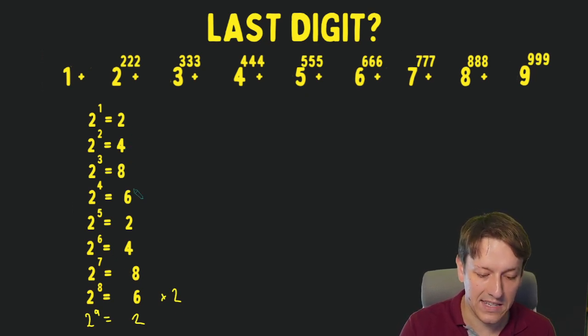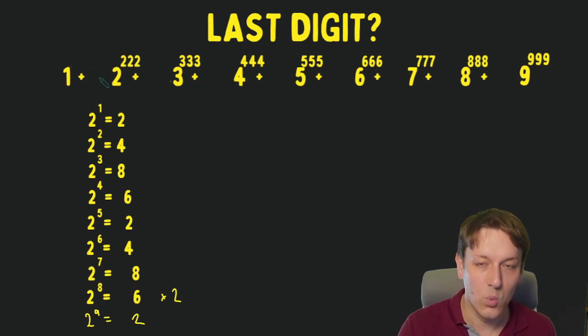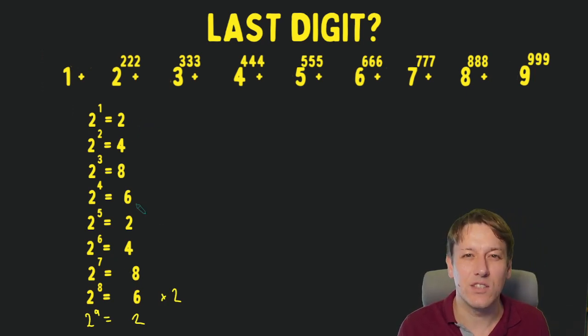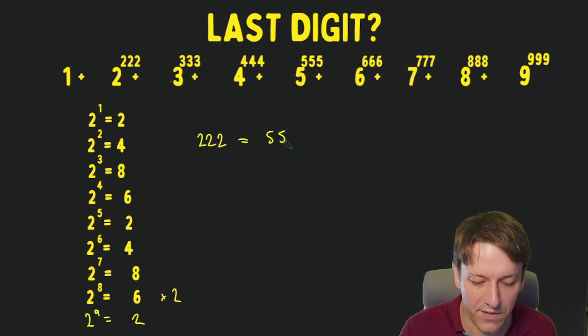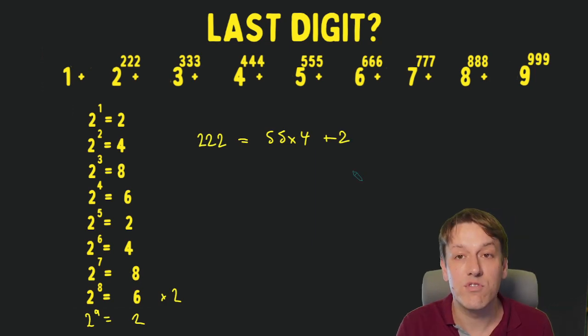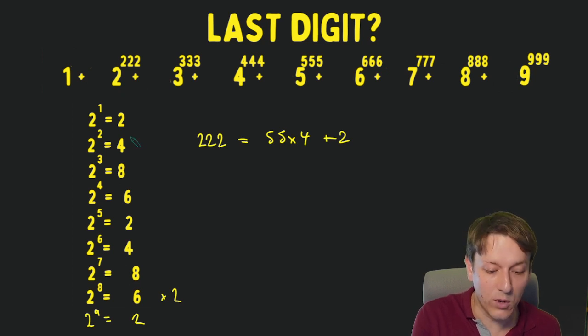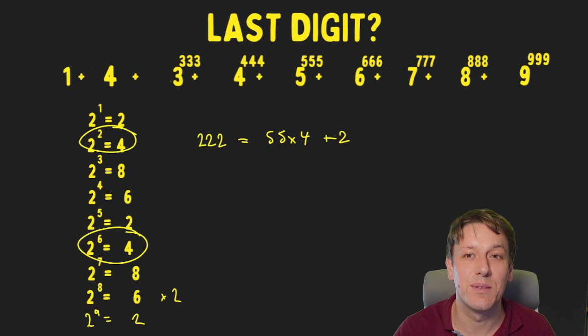2 times 2 is 4, 4 times 2 is 8, 8 times 2 is 16, the last digit is 6, 6 times 2 is 12, the last digit is 2, and so on. So the question is, where is 222 in this list? This pattern is repeating every 4, so that means that 2 to any multiple of 4 ends in 6, 2 to any multiple of 4 plus 1 ends in 2, and so on. If you think about 222, that is 55 times 4 plus 2, so 222 is 2 more than a multiple of 4. So the last digit of 2 to the 222 is 4.